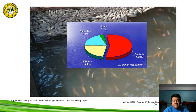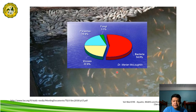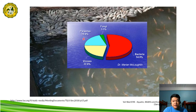This is the illustration of the different pathogens that affect farm tilapia, from Dr. Marian McLewin. As you can see, the majority of the pathogens that affect farm tilapia are bacteria, accounting for about 54.9%, followed by viruses at 22.6%, parasites, and fungi.